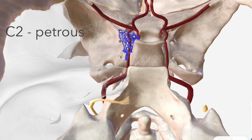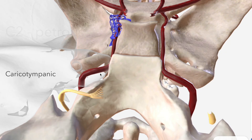From C2 we have our first two branches of the ICA. The first is the caroticotympanic branch, which supplies the middle ear with arterial blood, passing posterolaterally from the internal carotid into the middle ear.